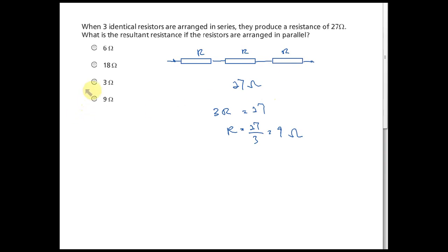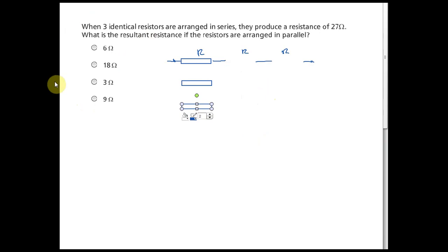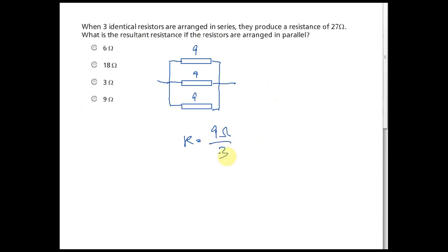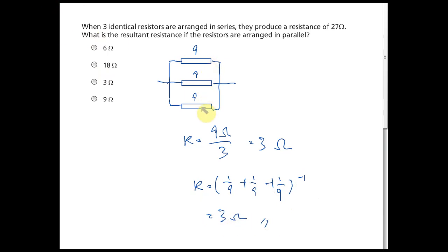Now if those three 9 ohm resistors are connected in parallel, the effective resistance = 9 ÷ 3 = 3 ohm. You can verify using the formula: (1/9 + 1/9 + 1/9) reciprocal = 3 ohm. When all resistors have the same value, simply divide one resistance by the number of resistors.